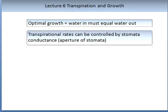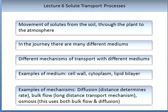Transpiration rates can be controlled by stomata conductance — that is, how open or closed the stomata are at any one given time. The journey that transpiration undergoes is that a solute will start in the soil, move through the plant and then leave to the outer atmosphere. In this journey, there are many different mediums which the solute will encounter.